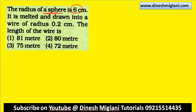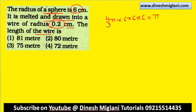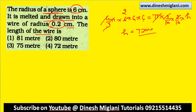The radius of a sphere is 6 cm and it is melted and drawn into a wire of radius 0.2 cm. What is the length of the wire? Volume of sphere = 4 by 3 pi r cubed = 4 by 3 pi into 216. Wire is a cylinder: pi r squared into h = pi into (2/10) squared into h. Cancelling pi and solving: h = 4 by 3 into 216 divided by 4 by 100 = 7200 cm = 72 meters. Fourth one is my answer — the length of the wire is 72 meters.